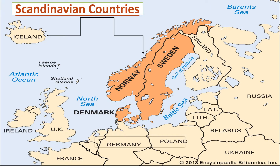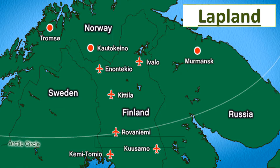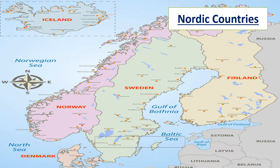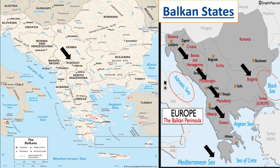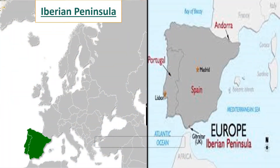Scandinavian countries include Norway, Sweden, Iceland, and Denmark. Lapland countries include northern parts of Norway, Sweden, Kola Peninsula of Russia, and Finland. Nordic countries include Norway, Sweden, Denmark, Iceland, and Finland. Balkan states include Albania, Bulgaria, Kosovo, Montenegro, Greece, Macedonia, and Bosnia and Herzegovina.